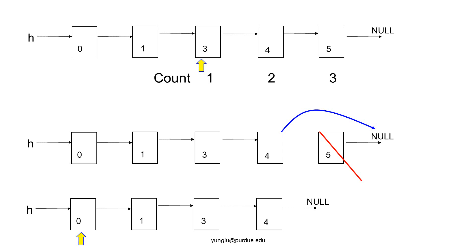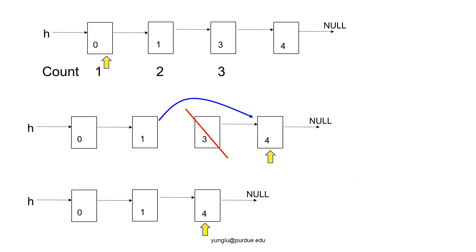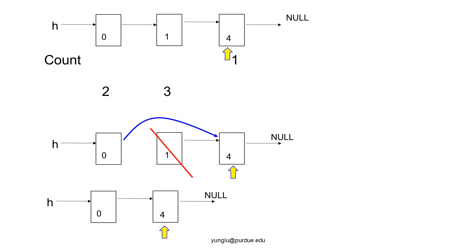The bottom of this slide shows the new linked list after one node has been removed. The up arrow marks where counting should continue. We start counting 1, 2, and 3 again. Remove one node. The up arrow shows where to continue counting. This time, counting needs to wrap around to the beginning of the linked list.